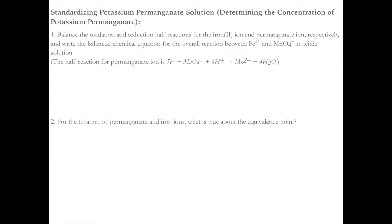The first thing I need you to do is to balance the oxidation and reduction half-reactions for the iron 2+ ions and the permanganate ion, then write a balanced chemical equation for the overall reaction. Then answer this question: for the titration of permanganate and iron ions, what is true about the equivalence point?